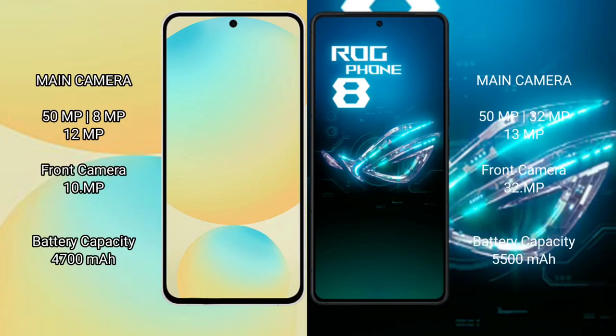Samsung Galaxy S24 FE features a triple camera setup: 50MP main, 8MP, and 12MP sensors, with a 10MP front camera. Asus ROG Phone 8 also has a triple camera setup: 50MP main, 13MP, and 5MP sensors, with a 32MP front camera.